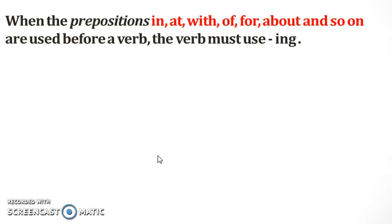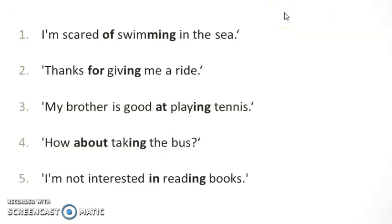Why is sentence one correct? When prepositions like in, at, of, or about are used before a word, that word must take ing. The concept is: a preposition like in, with, of, or at, when used before a verb, the verb takes ing with it.